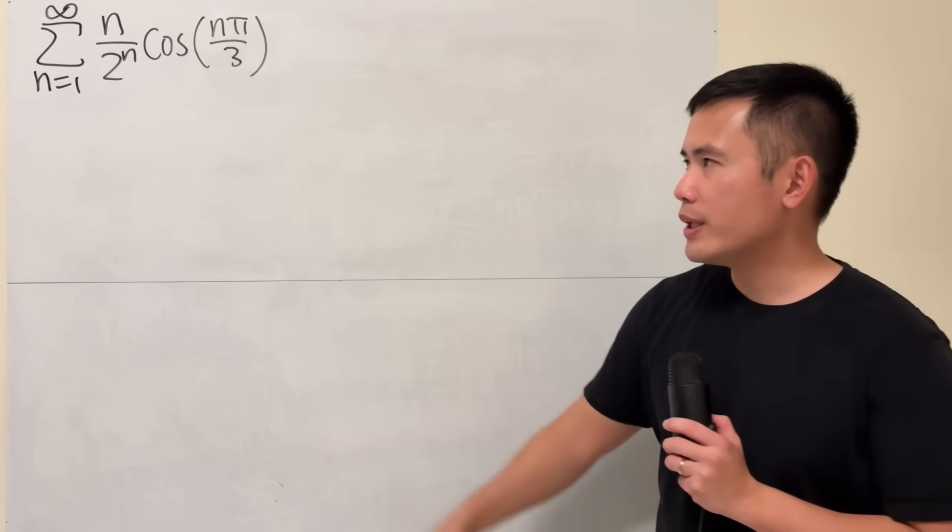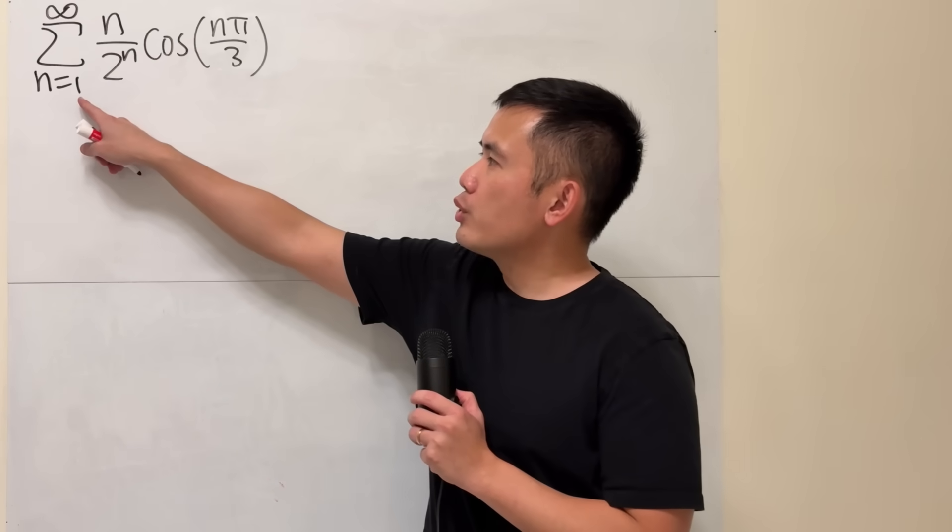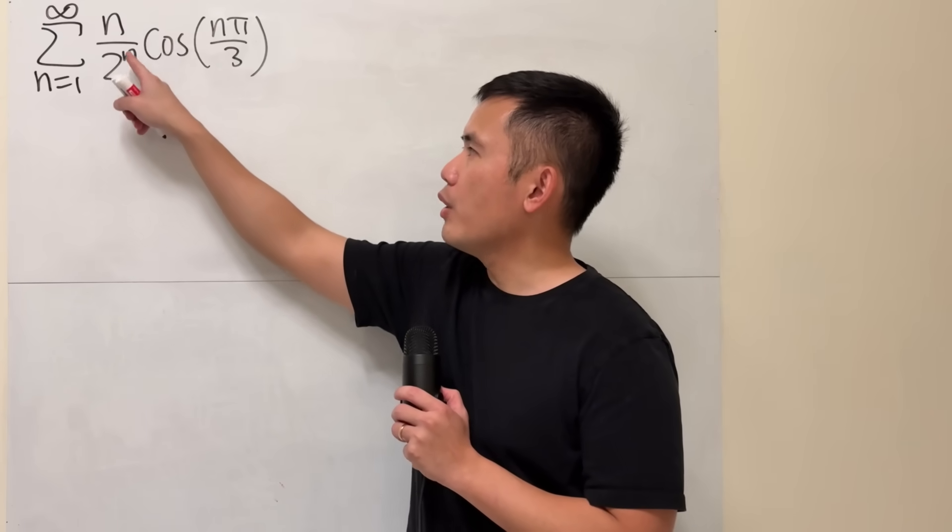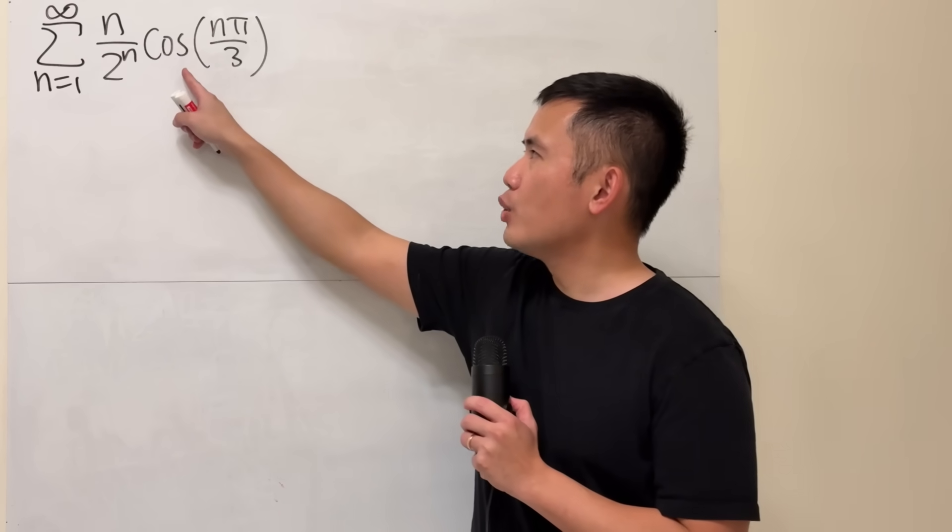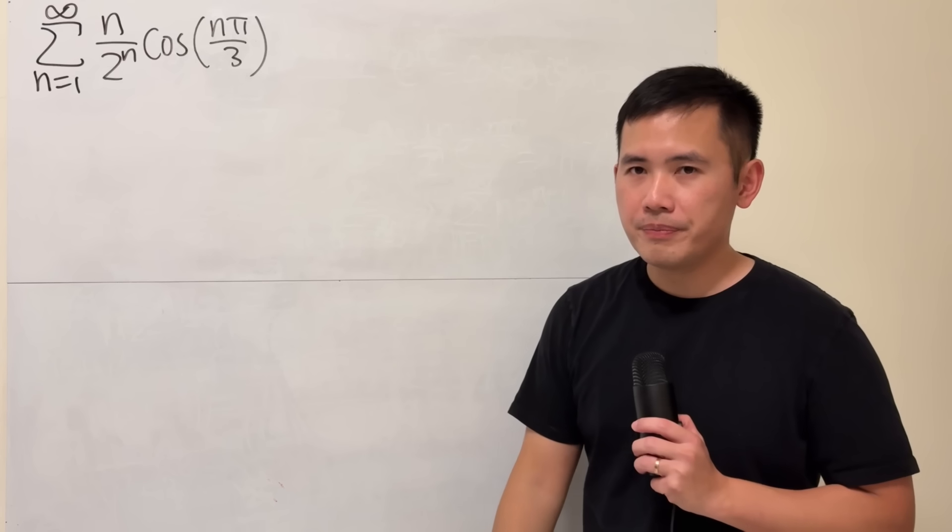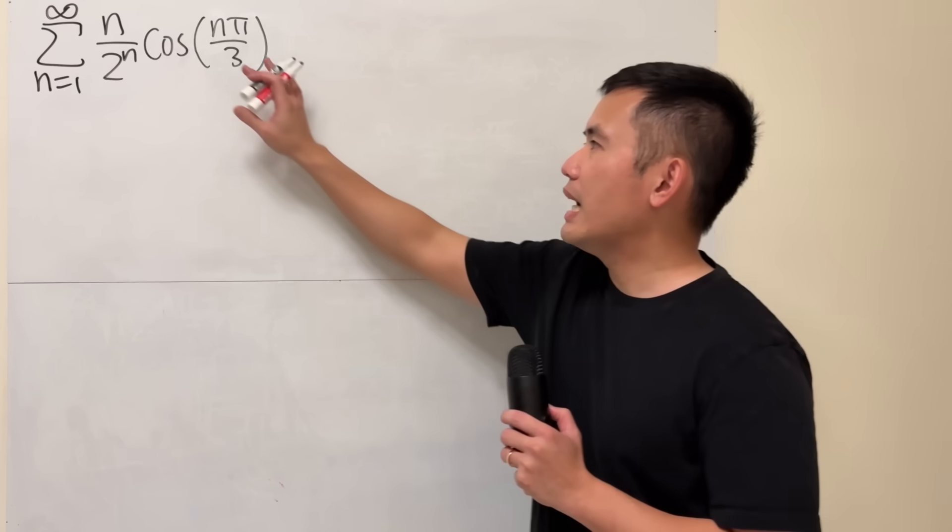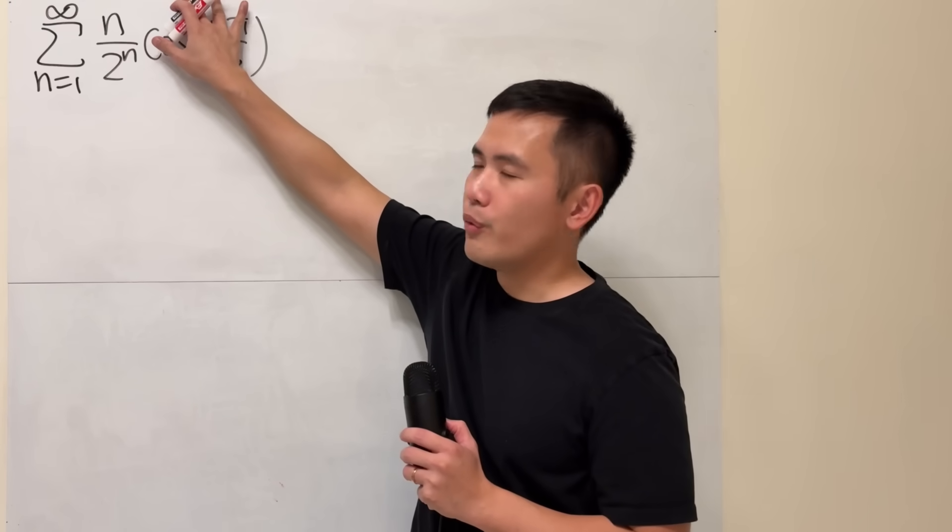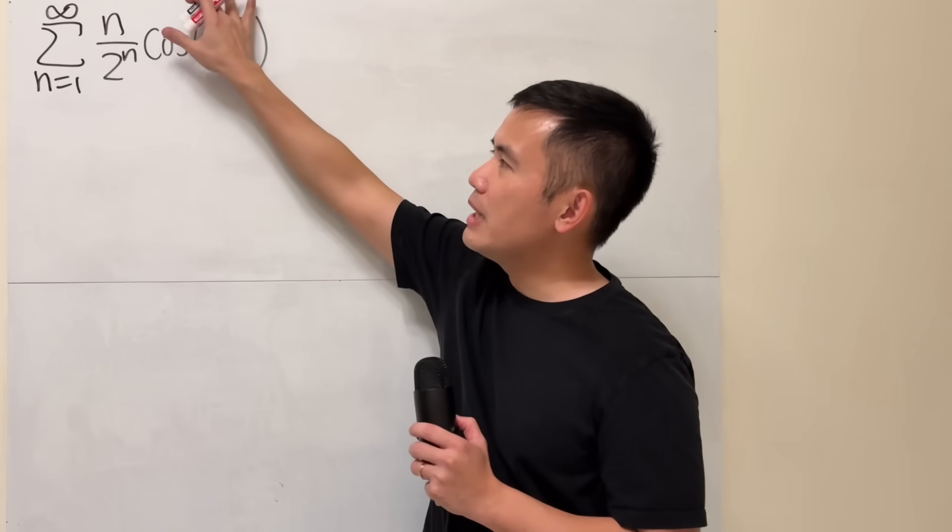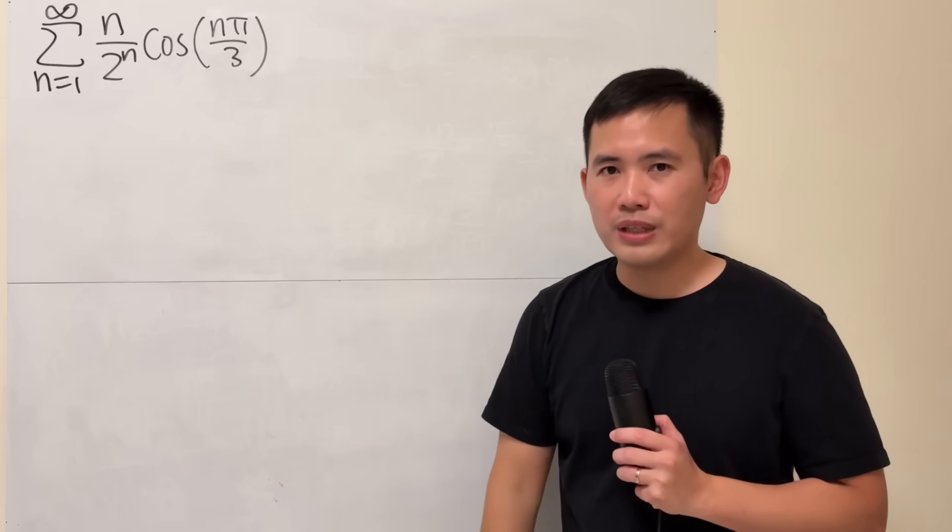Let me show you how we can evaluate this infinite series, n going from 1 to infinity of n over 2 to the n times cosine of n pi over 3. Okay, let's think about this a little bit. What if we didn't have the cosine of n pi over 3? In fact, we did that before, and there are many ways to do that.